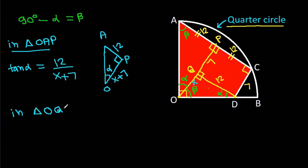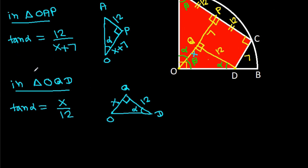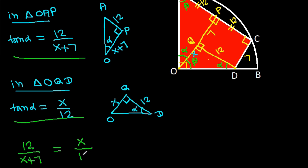And then in triangle OQD, the angle is alpha, this angle is 90 degrees, OQ is X, and QD is 12. So tan α = X / 12. From these two equations we can say that 12 / (X + 7) = X / 12.